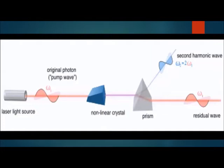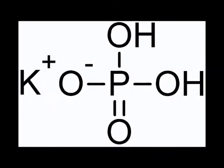Monopotassium phosphate is a chemical substance that, when crystallized, functions as a nonlinear element and in particular does second harmonic generation, or frequency doubling. In fact, it is most commonly used in that exact application for green laser pointers.